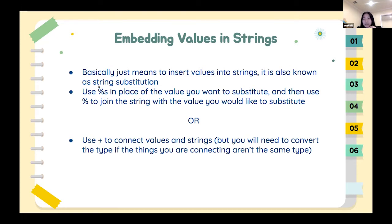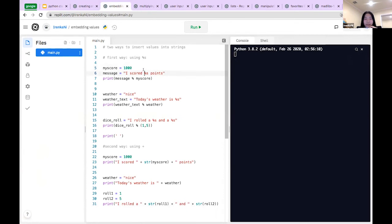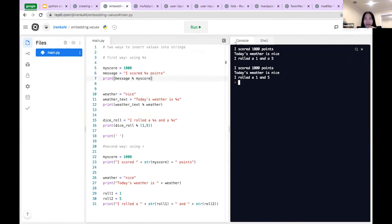The first way: use percent-s in place of the value you want to substitute inside the string, then use percent to join the string with the value. The second way is to use the addition sign to connect values and strings. However, if the value is an integer, Python will complain that you can only concatenate strings — so you'll have to change the type of the integer to a string. For example, to print 'I scored 1000 points,' use percent-s in place of 1000, then print: message percent my_score.